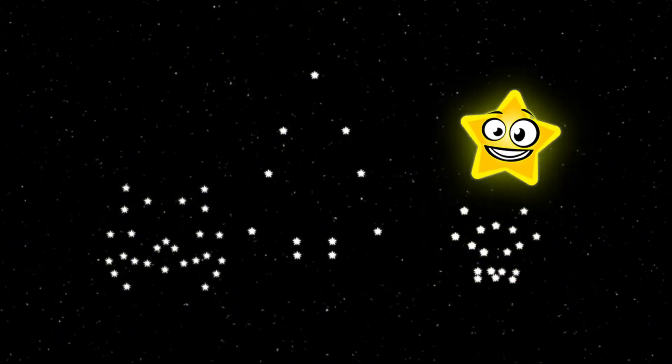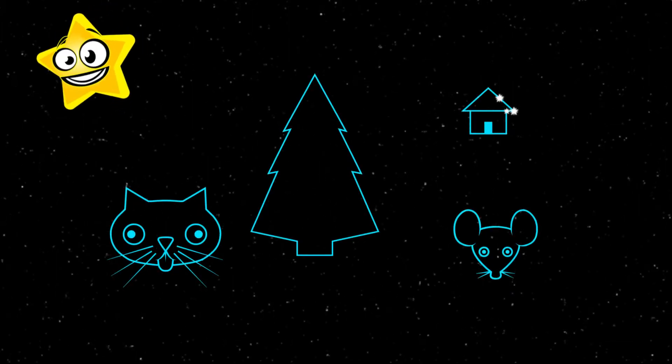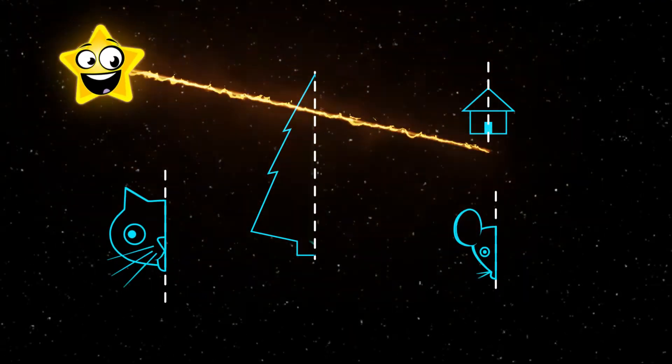That was pretty easy, right? Guess what? Symmetry is not just for shapes. Anything can be symmetrical or asymmetrical. You can look for it anywhere.